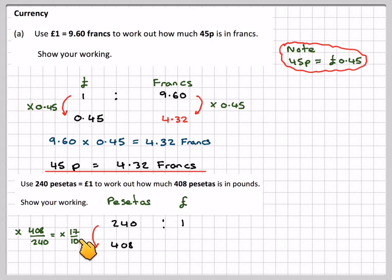Because you've done it to this side of the ratio, you must also multiply this side of the ratio by 17 over 10. 1 times 17 over 10 is the same as 1 times 1.7, which is 1.7.